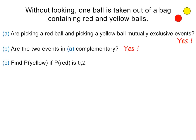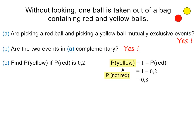In part C, we are asked to calculate the probability of picking a yellow ball if the probability of picking a red ball is 0.2. To answer this, we can use the fact that these two events are complementary. The probability of picking a yellow ball equals 1 minus the probability of picking a red ball, which is 1 minus 0.2. The probability is therefore 0.8. Please note, the probability of picking a yellow ball is the same as the probability of not picking a red ball, because yellow and red are complementary events.